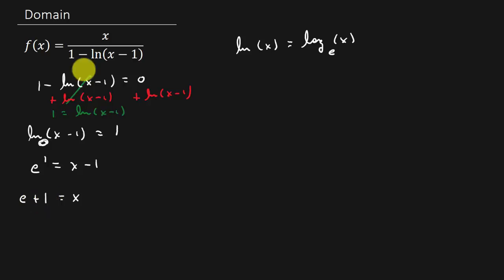So that's what would make the denominator 0. And then what's the other thing that we know? Well, the other thing that we know is we can't take the log of a negative number and we can't take the log of 0. So this part right here, this x minus 1 cannot be 0 and it cannot be negative.